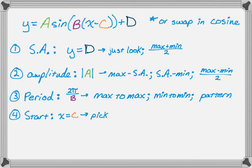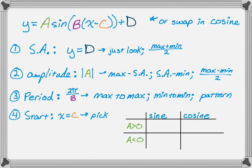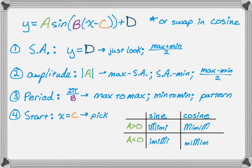Let's review the patterns. For sine, if a is positive, it goes: intercept, maximum, intercept, minimum, intercept. If a is less than 0, the maximum and minimum switch. For cosine, if a is greater than 0, it starts at a maximum. If a is less than 0, it starts at a minimum — the maximum and minimum switch again.